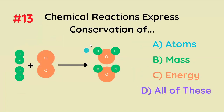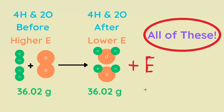Chemical reactions express the conservation of atoms, mass, energy, or all of them? It's actually going to be all of them, because yes, the atoms are conserved, but also the energy is conserved and the mass is conserved.